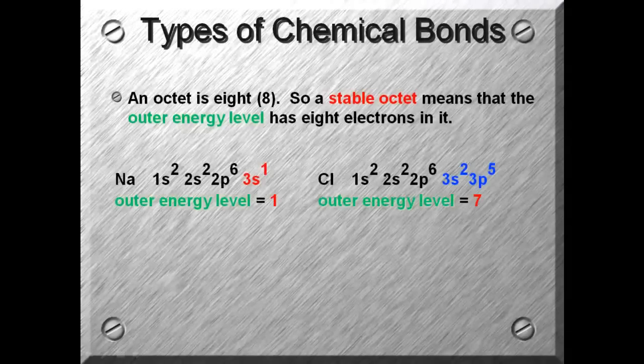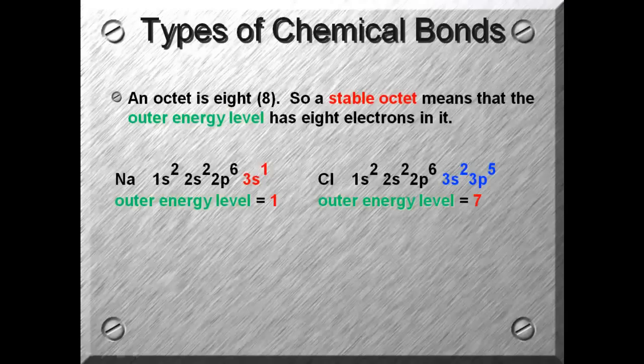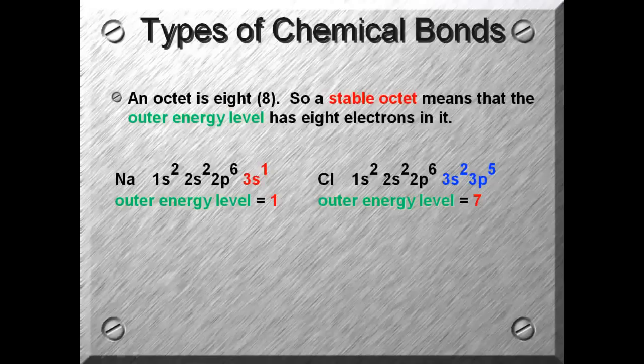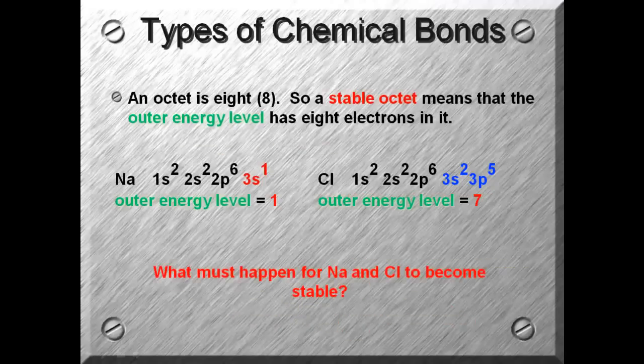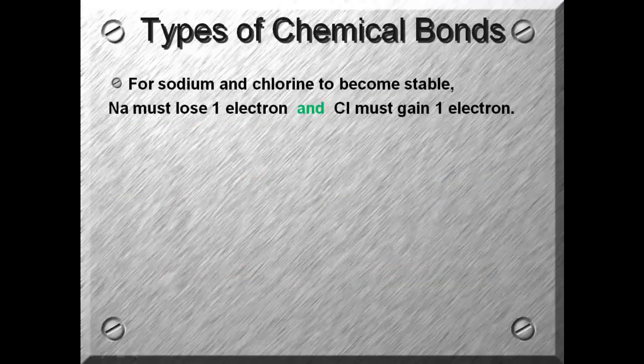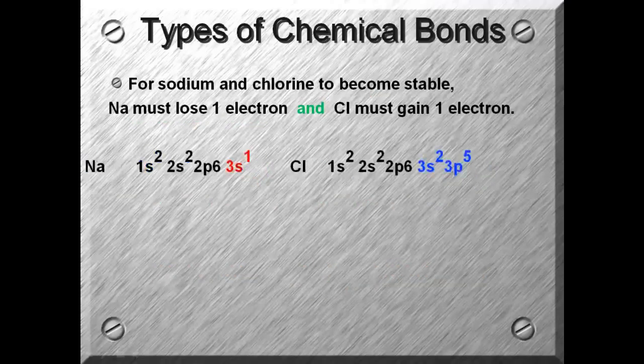Here we have two elements, sodium and chlorine. Sodium's electron configuration ends in 3s1, meaning that in its outer energy level it has one electron. Chlorine's electron configuration ends in 3s2 3p5, indicating an outer energy level filled with 7 electrons. So what must happen for sodium and chlorine to become stable? Well, sodium must lose one electron and chlorine must gain one electron.